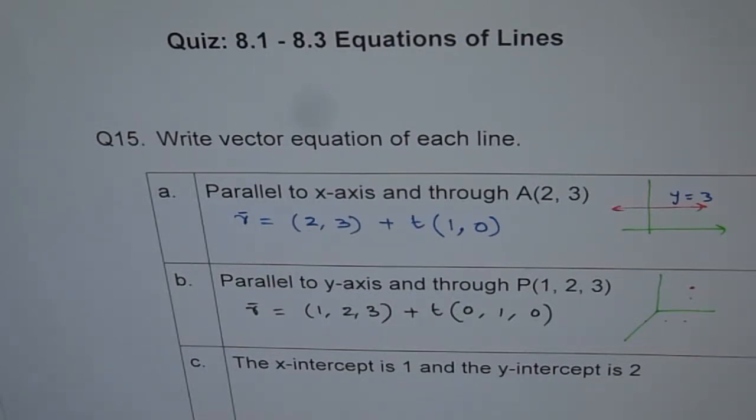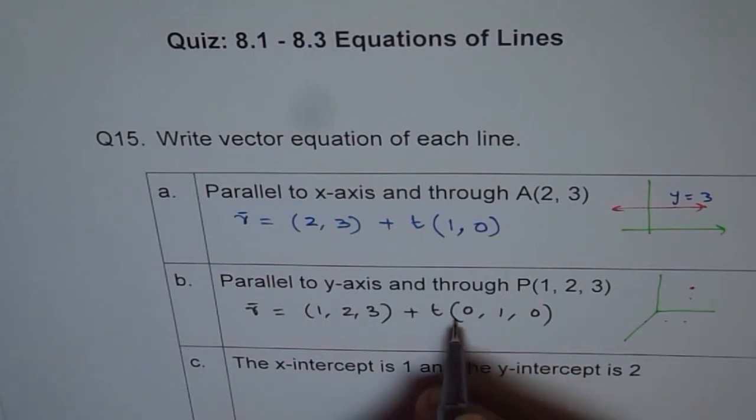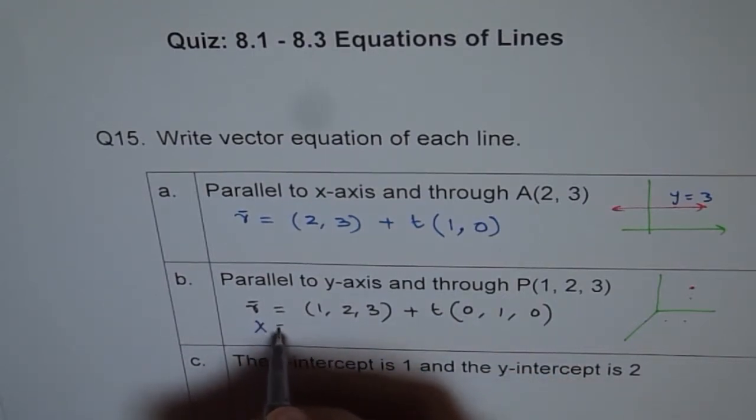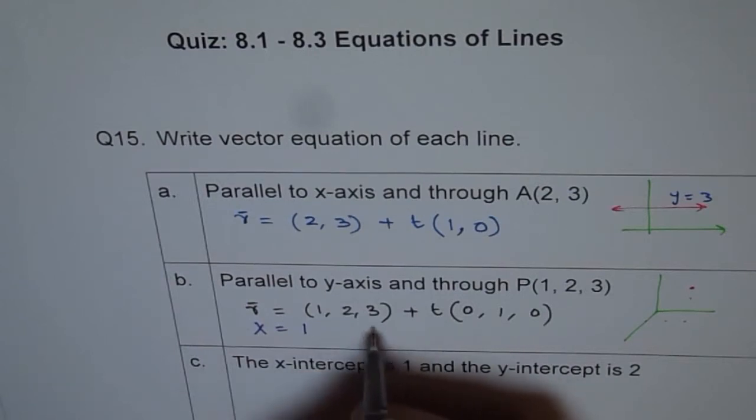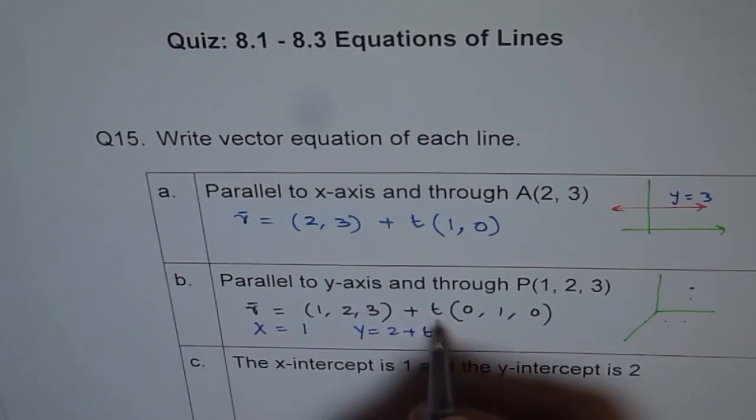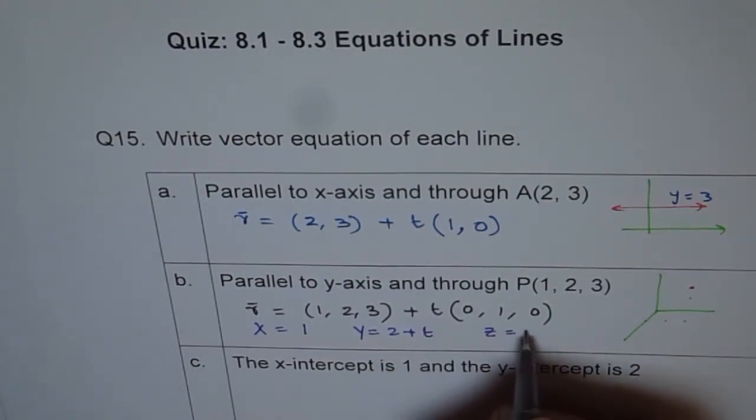Now, we can look into it in so many different ways. For example, now if you split this up, let's try to analyze it. If you split this up, then we have x is equal to 1 all the time. x is equal to 1 because t is 0. And y is equals to 2 plus t. And z is equals to 3.